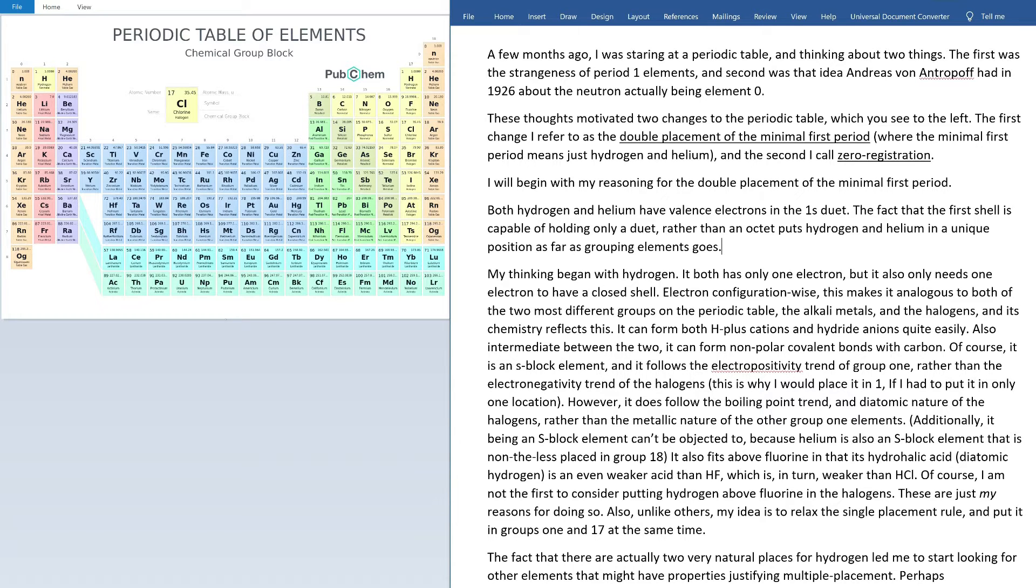Both hydrogen and helium have valence electrons in the 1s duet. The fact that the first shell is capable of holding only a duet rather than an octet puts hydrogen and helium in a unique position as far as grouping elements goes. My thinking on this began with hydrogen, so that's what I'll start with here. It both has only one electron, but it also only needs one electron to have a closed shell. Electron configuration-wise, this makes it analogous to both of the two most different groups on the periodic table, the alkali metals and the halogens, and its chemistry reflects this. It can form both H-plus cations and hydride anions quite easily.